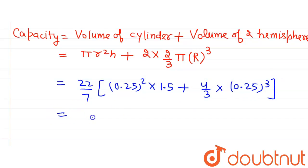Now solving it further, we will get 22/7, this 0.25² multiplied by 1.5 will give us 0.09375 plus this 4/3 multiplied by 0.25³ will give us 0.0208 approximately.